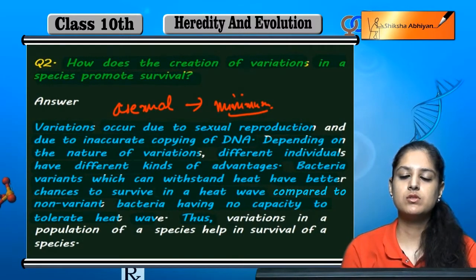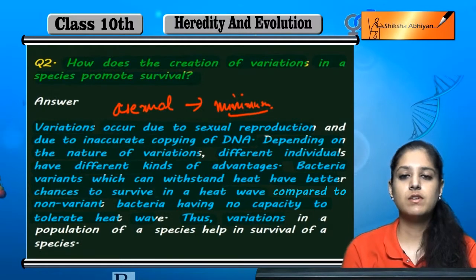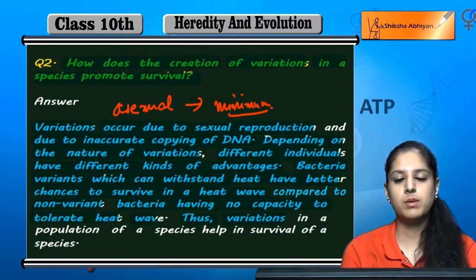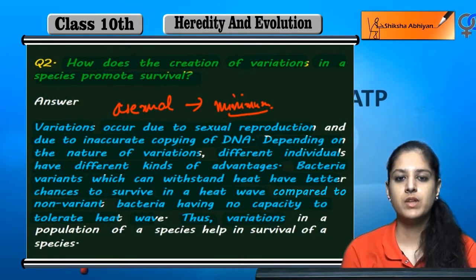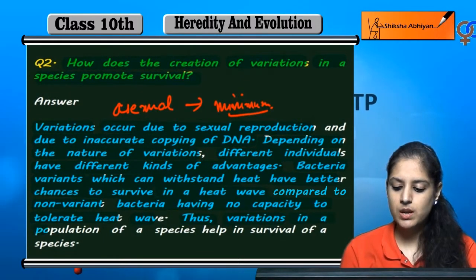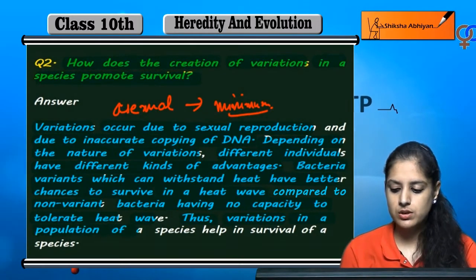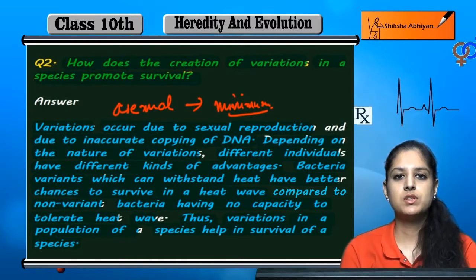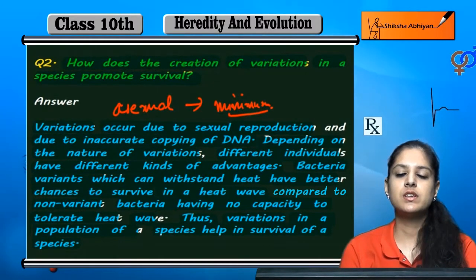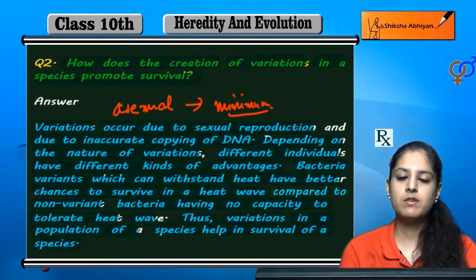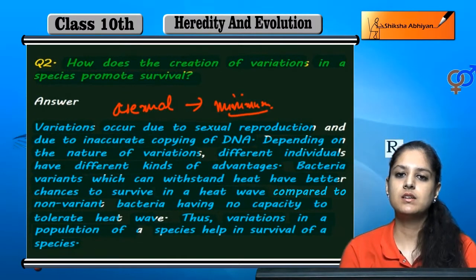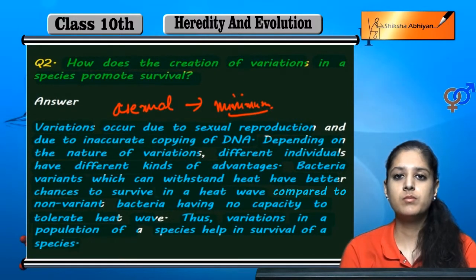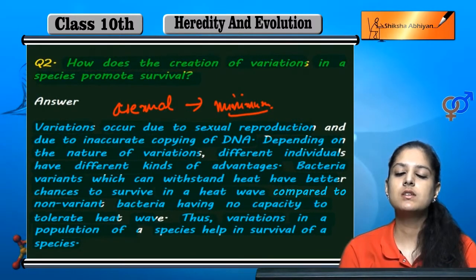We have taken an example of bacteria. There are variations — some can reduce heat and some cannot. This is a different variation. Variations in a population of a species help in the survival of that species. The bacteria that are able to survive the heat demonstrate that these variations are very important for the species and their survival.